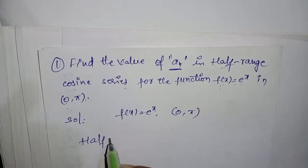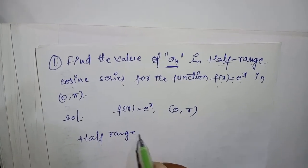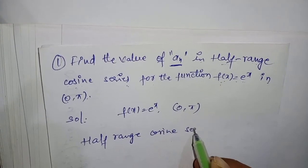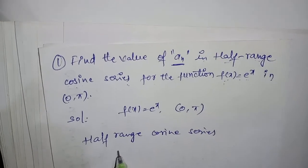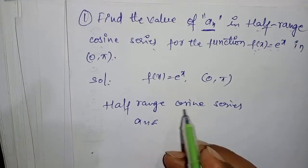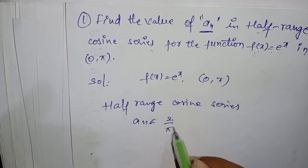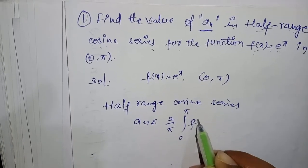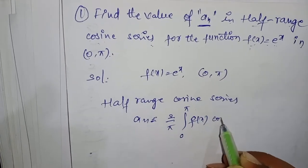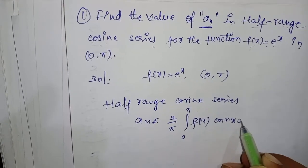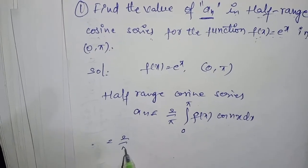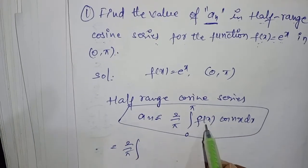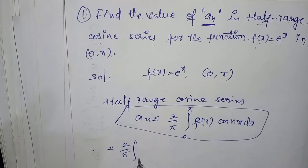For the half-range cosine series, the formula for aₙ is: aₙ = (2/π) × integral from 0 to π of f(x) × cos(nx) dx. Substituting f(x) = eˣ, we get aₙ = (2/π) × integral from 0 to π of eˣ × cos(nx) dx.